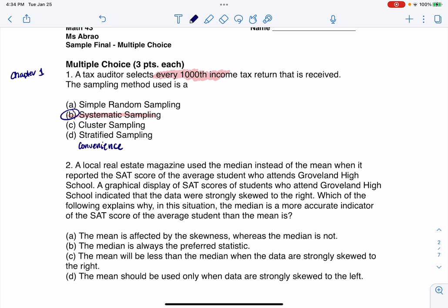All right. And SRS would be if this tax auditor took a look at every tax return that was received. Let's say he received capital N of them. And then if he just put in his calculator random int and did one comma capital N, and maybe he wanted M of those. Let's say, for example, he received 250 tax returns, but he wanted a sample of maybe 20. He would put 20 here. So that would be simple random.